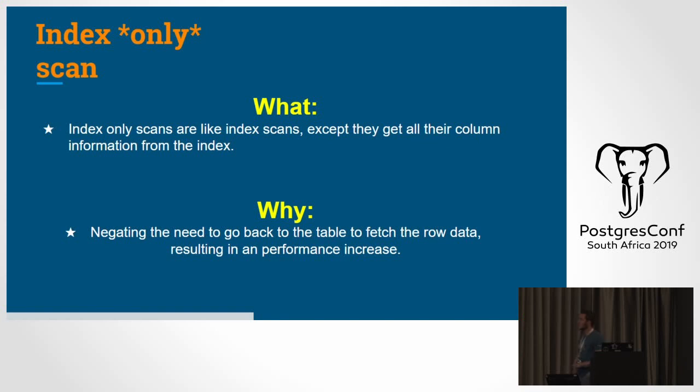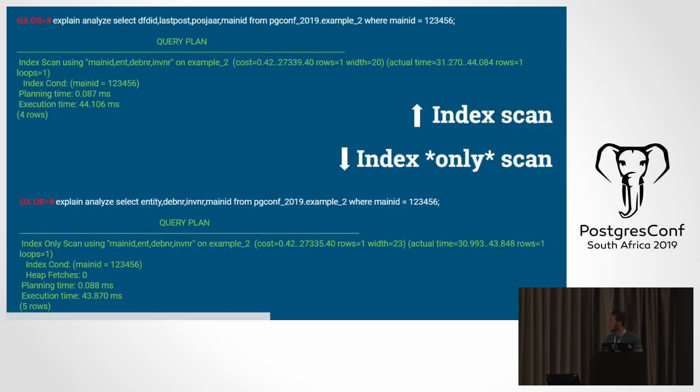Index only scan. I like this scan. This is a cool scan. So index only scans are like index scans, except for they retrieve all the column information from the index itself. This would negate the need to go back to the table to fetch the row data, resulting in a performance increase. Please note that this is not available to every type of index. For example, GIN indexes don't allow this because they don't store all the underlying information. But yeah, this is really fast. My example is terrible. Absolutely terrible. But it's a little bit faster. At the bottom, we have an index only scan. I'd just like to touch on something quickly. Currently, as Andris mentioned earlier, we are only working on Postgres 9.5. So we're not really familiar with parallelism yet. So obviously, the types of scans work a little bit differently on those versions.